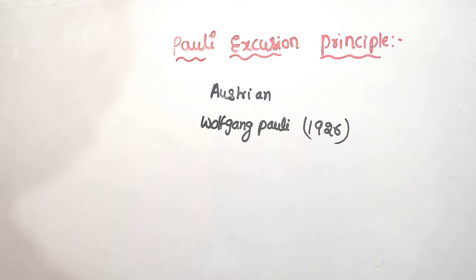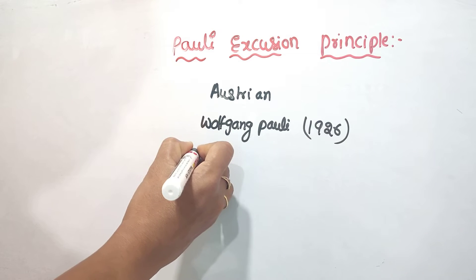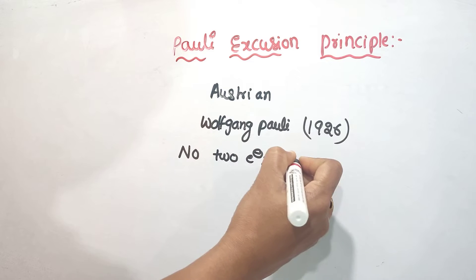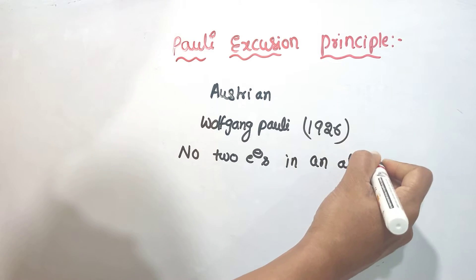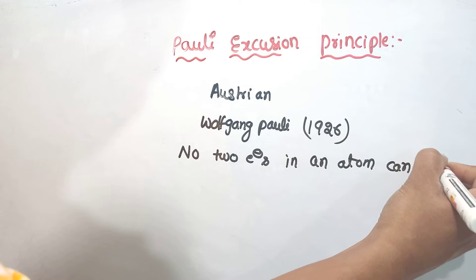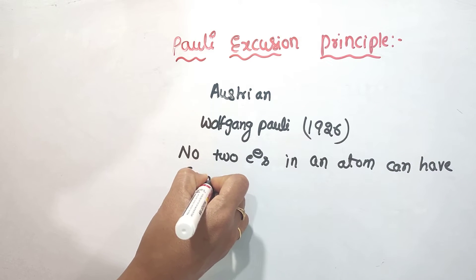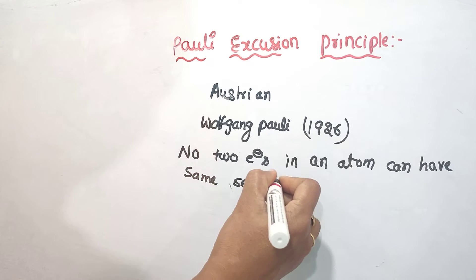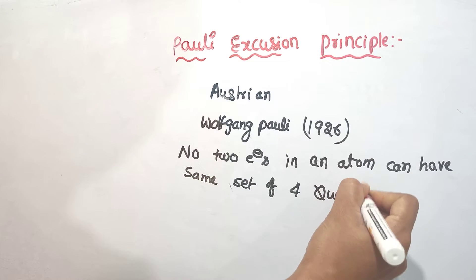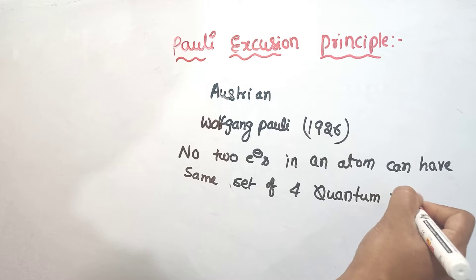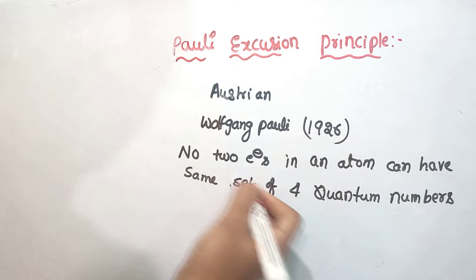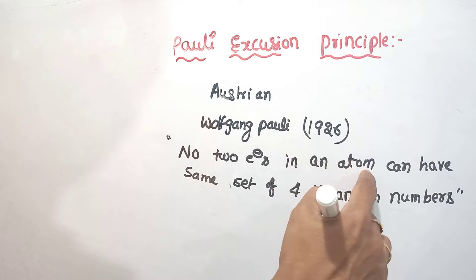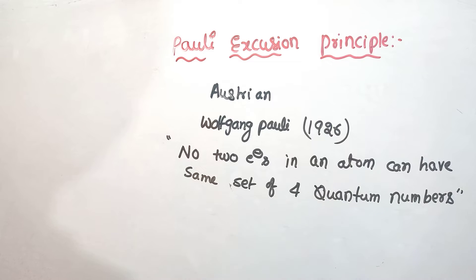The principle states: no two electrons in an atom can have the same set of four quantum numbers. Quantum numbers have already been discussed. So the principle is: no two electrons in an atom can have the same set of four quantum numbers.